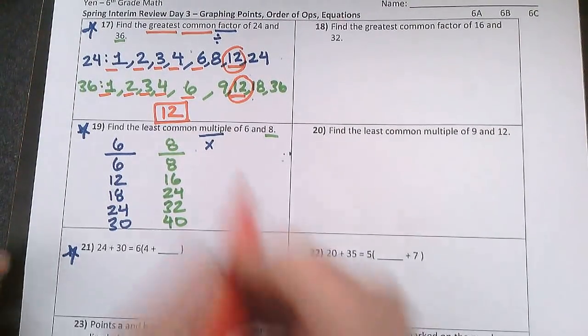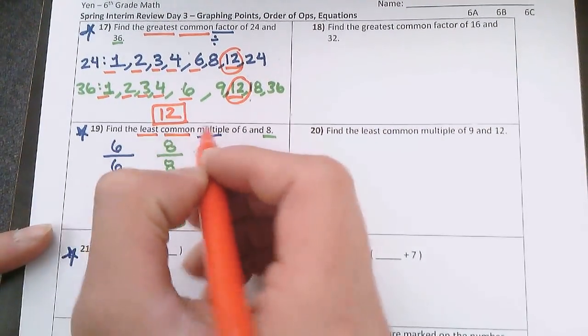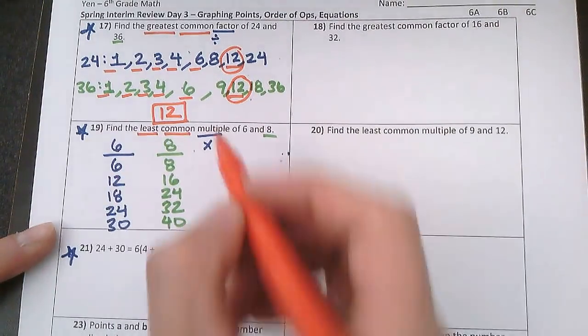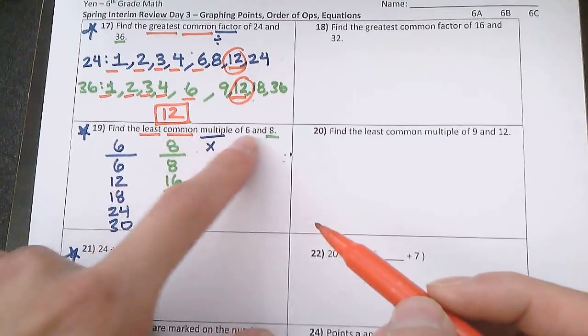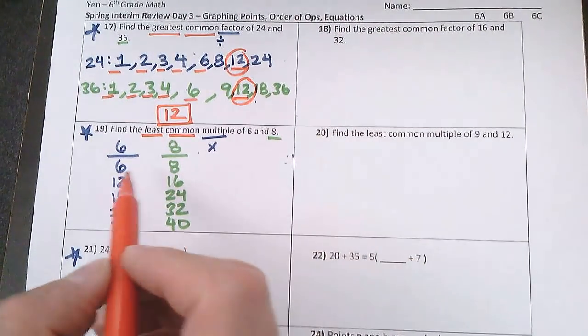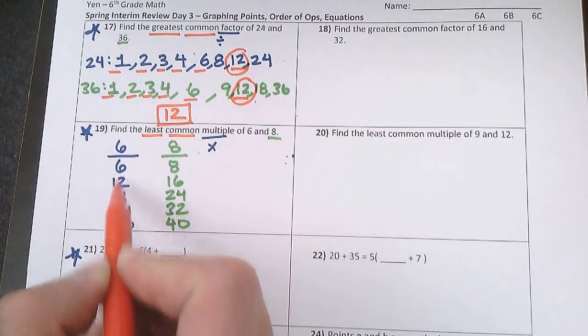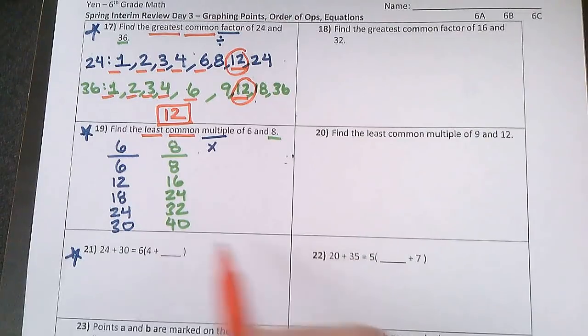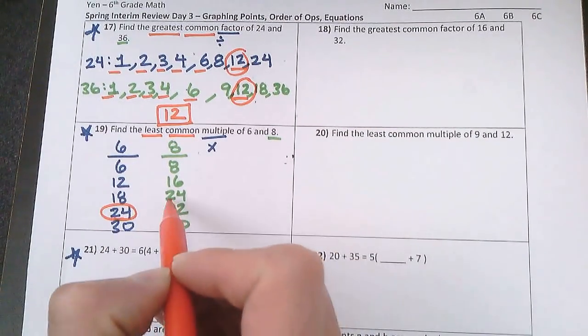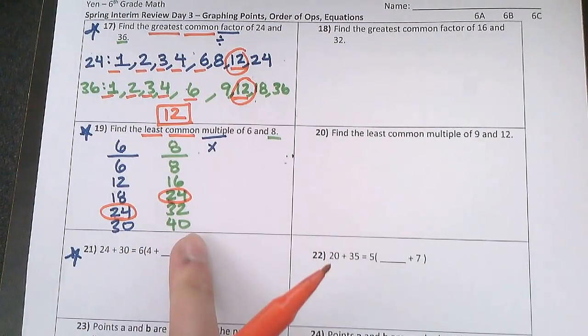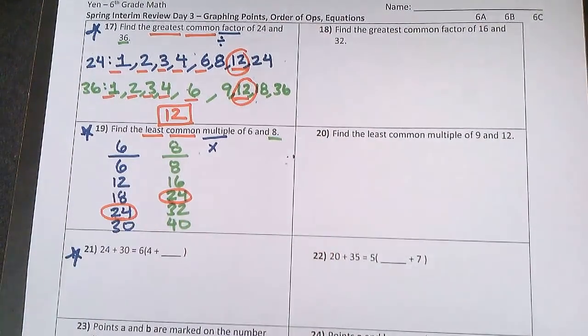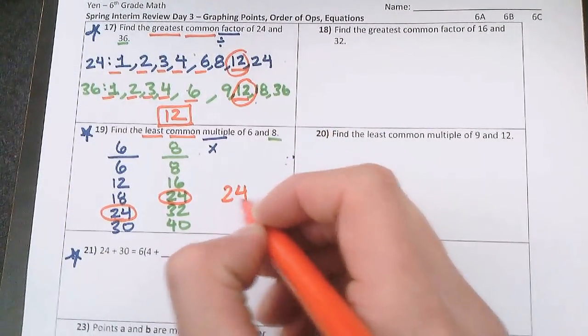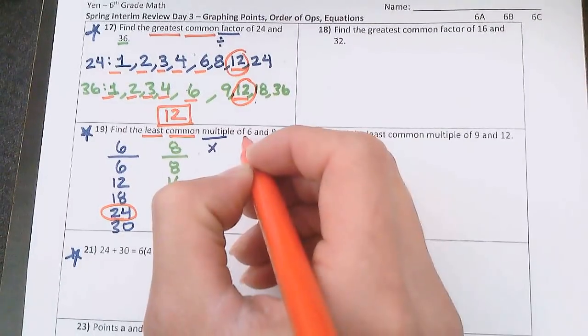And if I'm looking for the least common multiple, least means lowest. Common means it occurs in both. It happens in both. So I look for, are there any multiples that are in both lists? Well, I know I have a 24 here and a 24 there. And that's the lowest possible one that's shared in both. So 24 is the lowest common multiple of 6 and 8.